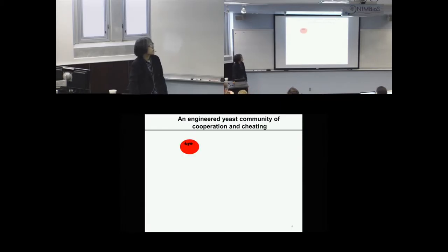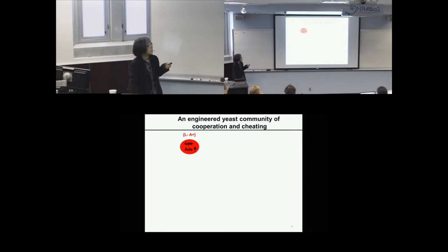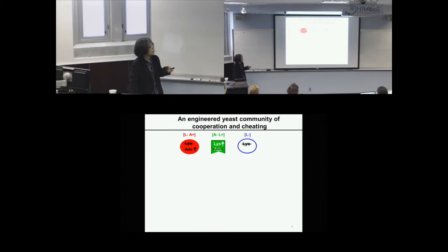This community consists of three strains. The first cannot make lysine but overproduces adenine — L-minus A-plus. The partner species cannot make adenine and overproduces lysine. And the third species cannot make lysine. The three strains are labeled with different fluorescent proteins so we can track them.